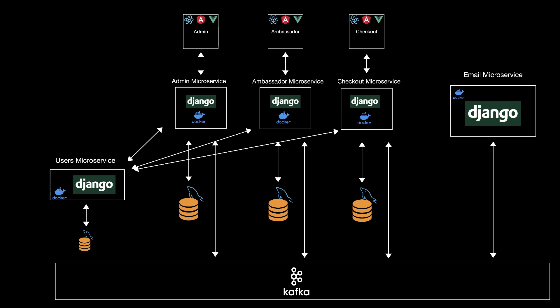They will communicate with the users microservice via internal HTTP requests. They will also have a separate microservice — the email microservice — whose only job is to send emails. They will communicate using events through Apache Kafka. The microservices themselves will also communicate with each other using Apache Kafka.